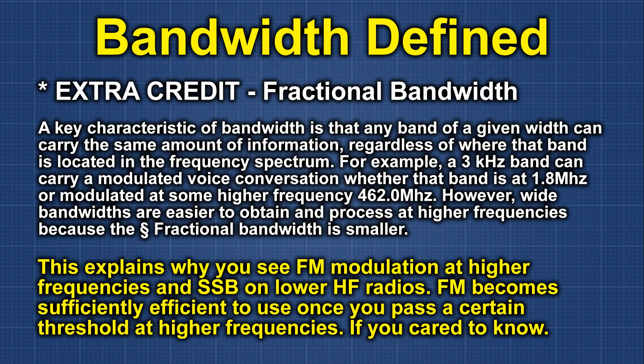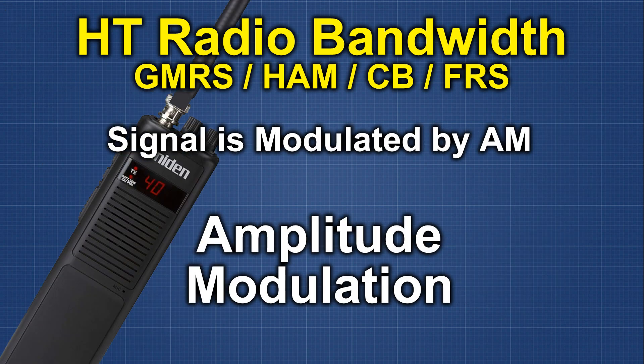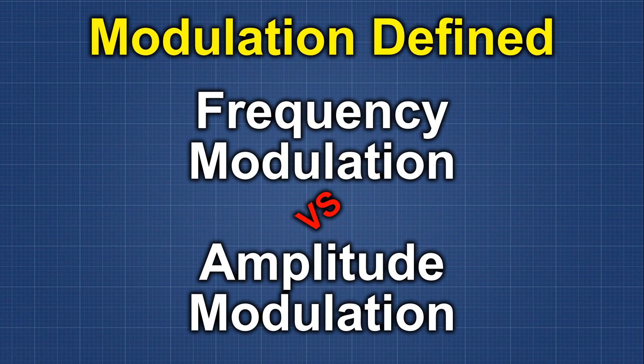If you are operating one of the popular handheld radios, whether they be GMRS or in the ham bands, typically you will find these operating in the FM type of modulation. If you are using a CB walkie-talkie, that will be in the AM style of modulation — FM being frequency modulation and AM being amplitude modulation.